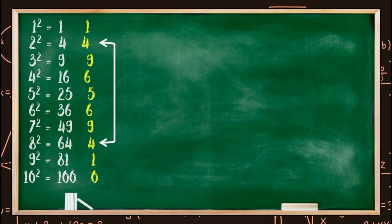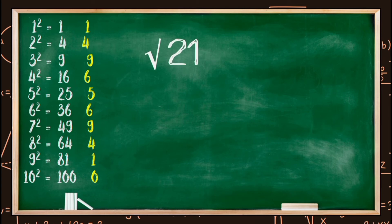Now let us learn square root shortcuts by taking two examples. First example: find the square root of 2116. Step one — we need to group the last pair of digits and the rest of the digits together. The first group is 16 and the second group is 21.